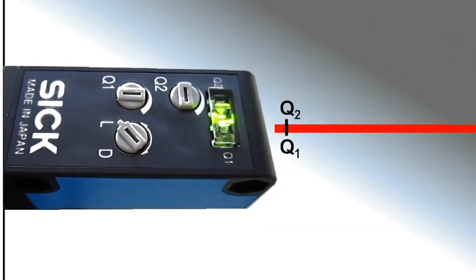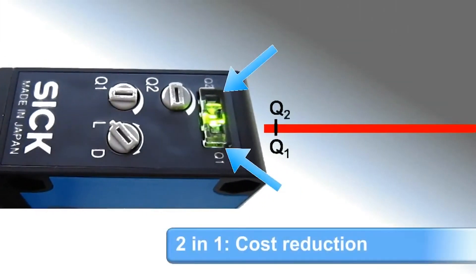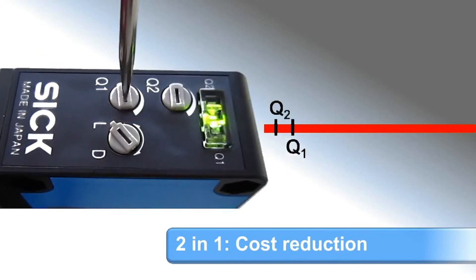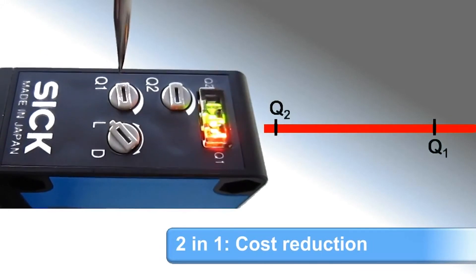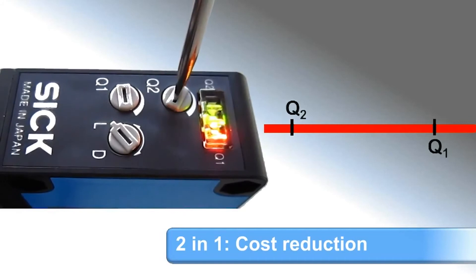Another version has two independent potentiometers and two LEDs. This means that we can independently set two sensing ranges, as well as display their status via the LEDs.